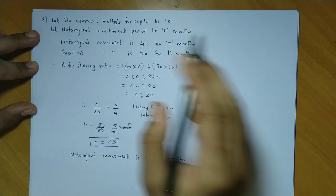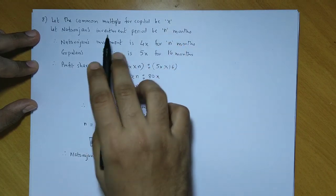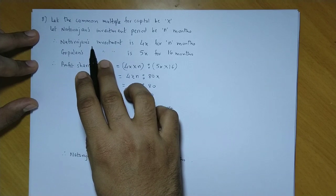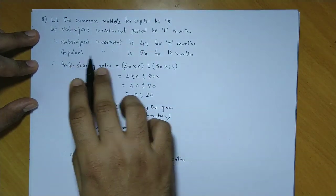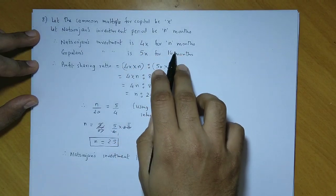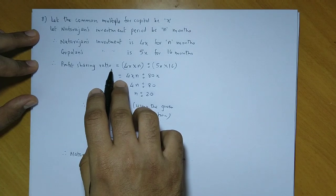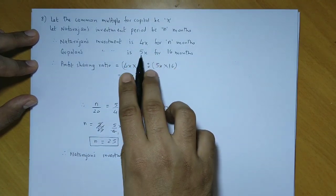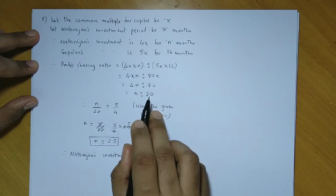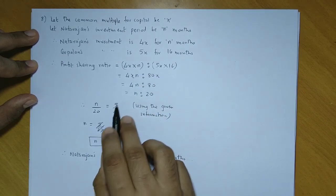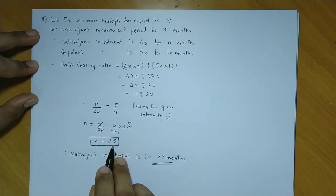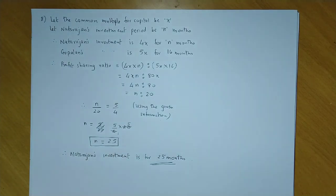To recap: common multiple x is taken for capitals. Natarajan's investment period is n months. Natarajan and Gopalan's capital ratio is 4:5. Natarajan's investment is 4x for n months, and Gopalan's investment is 5x for 16 months. Taking the product, profit sharing ratio is 4xn : 5x×16, giving n:20. Since the given profit ratio is 5:4, we get n/20 = 5/4, so n = 25. Therefore, Natarajan's investment is for 25 months.